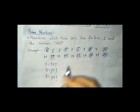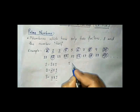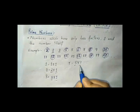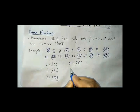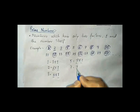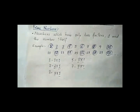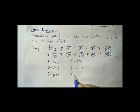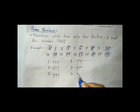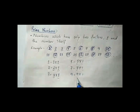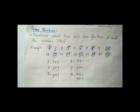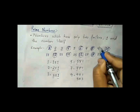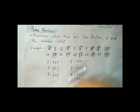Now let us see five. Five has how many factors? Five has two factors, so five is also a prime number. Seven has two factors, so seven is also a prime number. Now let us see nine. Nine has how many factors? Nine has three factors, that is why nine is not a prime number.